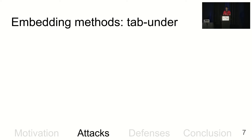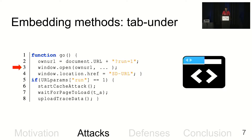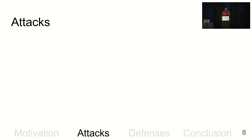In other browsers, we use the third method, called tab-under. In the tab-under approach, upon user click, a new tab is opened which has the focus, and then the initial tab in the background navigates to load the shared resource while the tab in focus starts measuring the cache access patterns. So we used three different methods — iframe-based, pop-under-based, and tab-under-based approaches for the attacks.